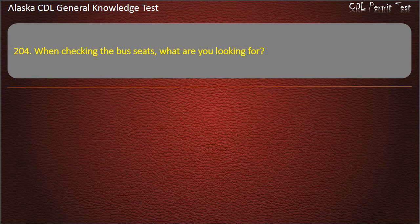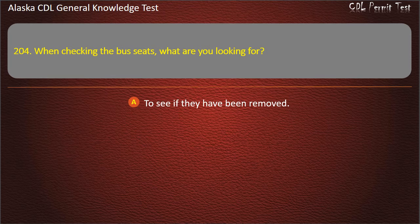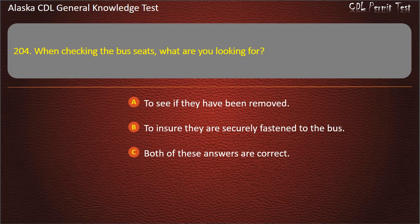Question 204. When checking the bus seats, what are you looking for? To see if they have been removed, to ensure they are securely fastened to the bus, or both of these answers are correct. Answer: Both of these answers are correct.